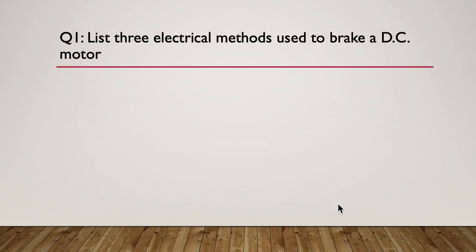Question one: list three electrical methods used to brake a DC motor. That's brake as in slow down.